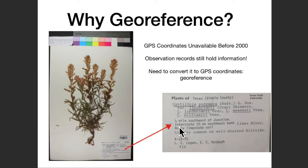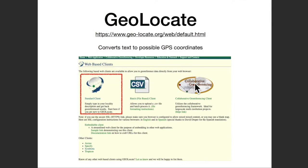For this specimen to be used as part of a species distribution model, we need to convert these words into latitude and longitude, more like a GPS point. In this exercise, you'll be using a tool to help you identify where species and specimens are located. Go to the Geolocate website and select the standard client to get started.